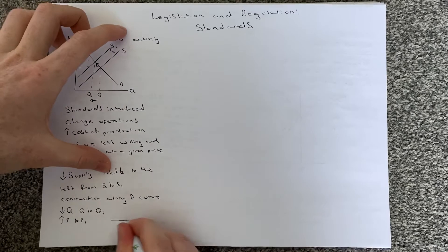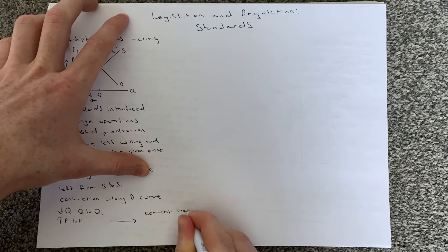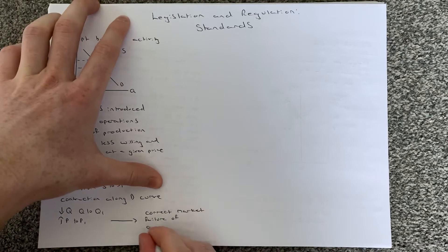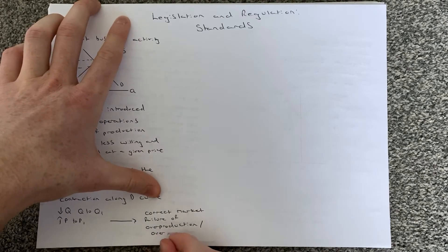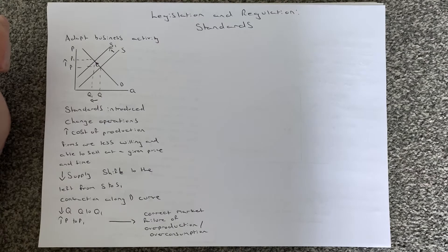The reason why it does that is because the price rises and the quantity falls. By doing so, that should help to correct the market failure of overproduction as well as overconsumption.